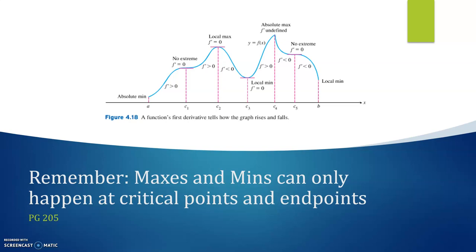For example, here we have a critical point at C1 where the first derivative is equal to zero because we have a horizontal tangent line, but our function is increasing — F prime is positive — and then continues to increase after that point. So our function is increasing, leveling off for a little bit, but then continuing to increase. So there is no extreme value at that critical point. It's a critical point, but it's not an extreme value.